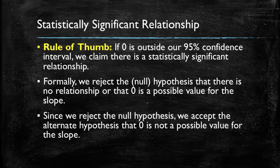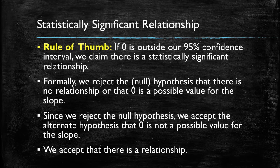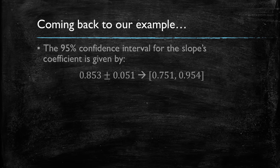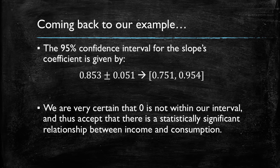If we reject the null hypothesis — meaning zero is not a possible value — then some other numbers must be within our 95% confidence interval, and there may be a positive or negative relationship, but we are sure that there is some relationship. In other words, we accept the alternate hypothesis. Going back to our example: our 95% confidence interval ran from 0.751 to 0.954, and it is very obvious that zero is not within this range. This means we're quite sure that zero is not among the possible values, and hence there is a statistically significant relationship between income and consumption.